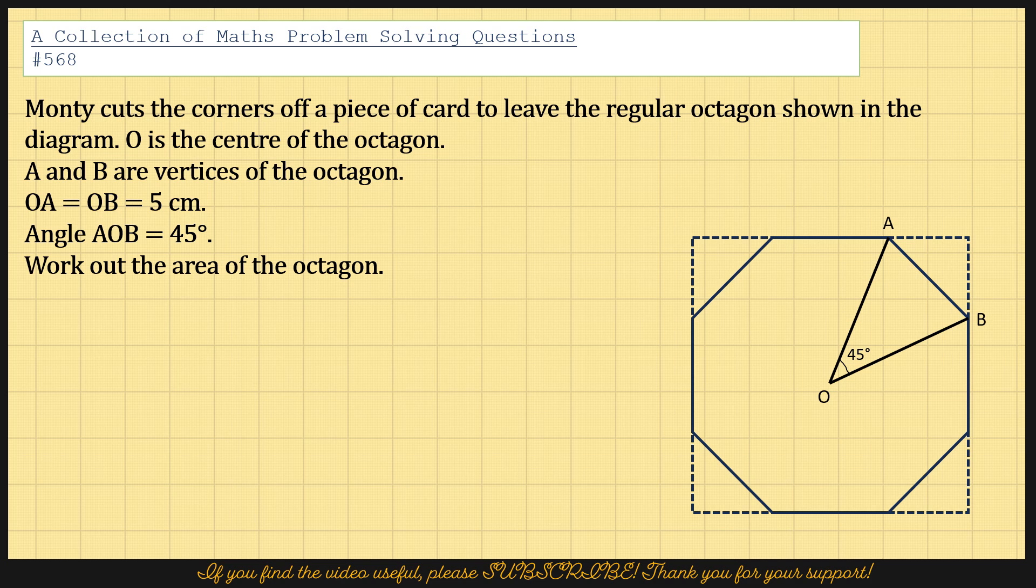Monty cuts the corners off a piece of card to leave the regular octagon shown in the diagram. O is the centre of the octagon. A and B are vertices of the octagon. OA equals OB equals 5 cm. And angle AOB is 45 degrees.